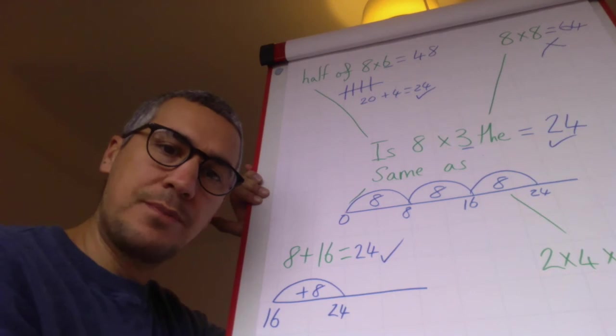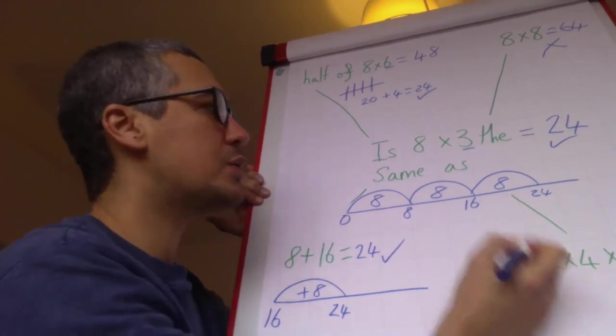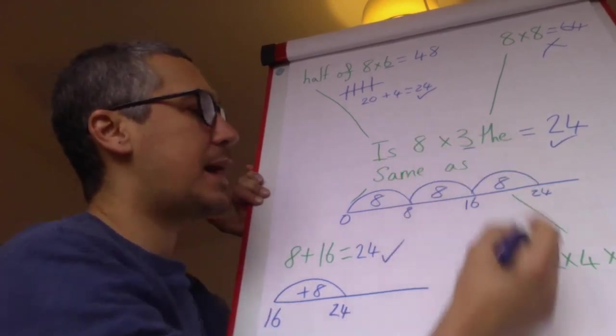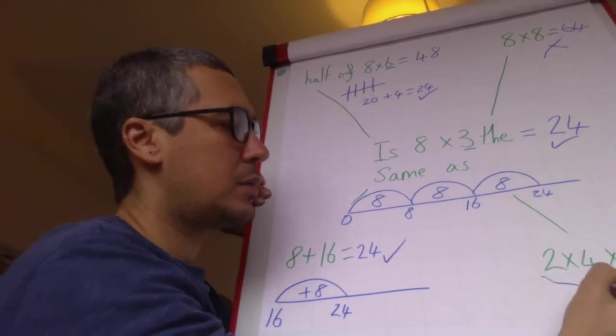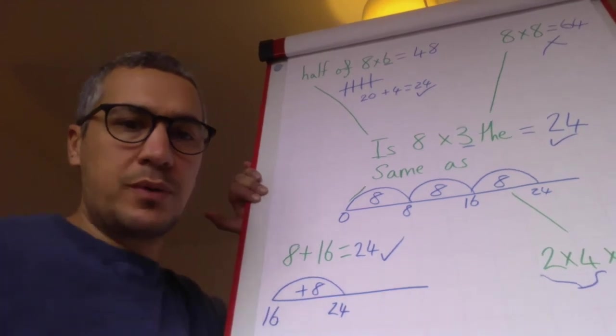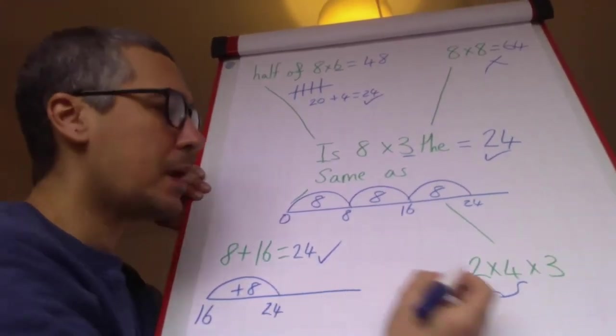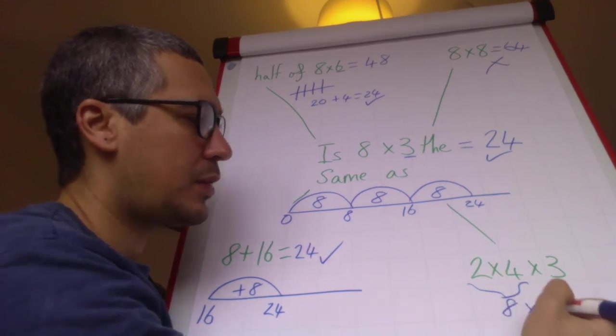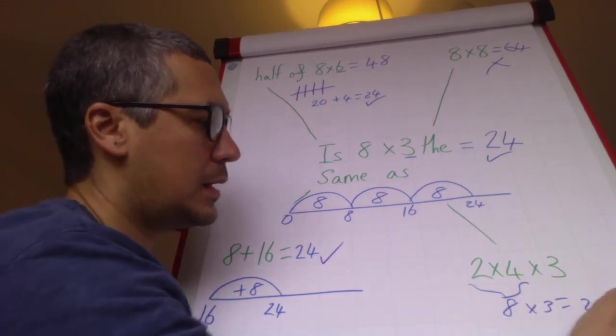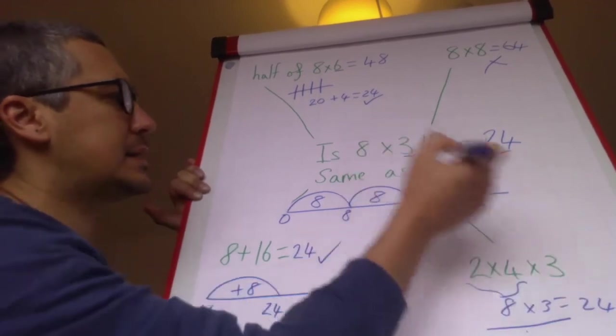Over here: is eight times three the same as two times four times three? Let me just move that computer over a little bit more so you can see it. Two times four equals eight, so eight times three equals twenty-four. Yes, that's the same.